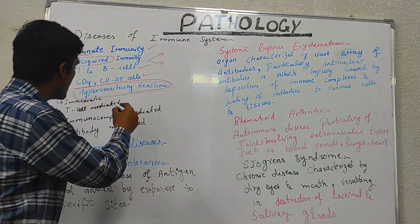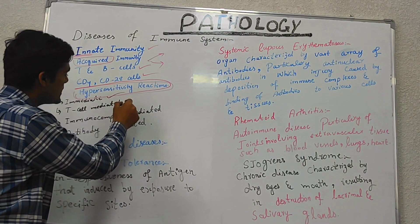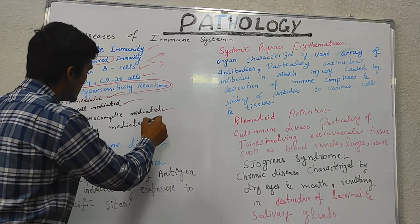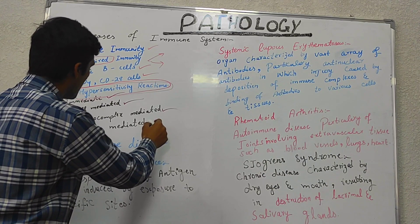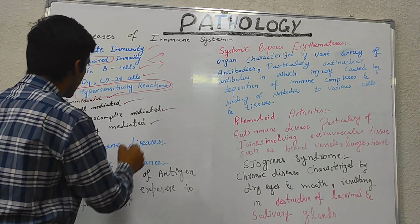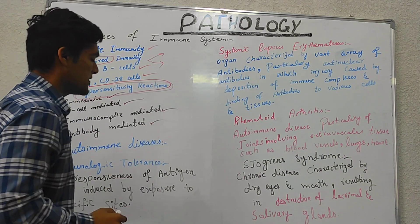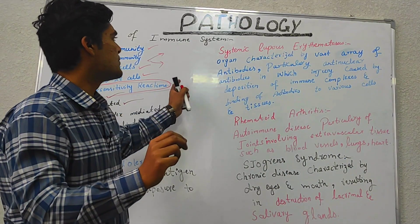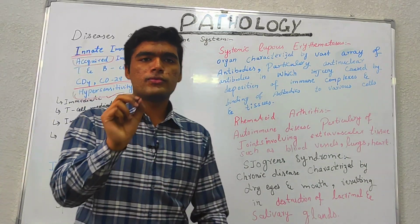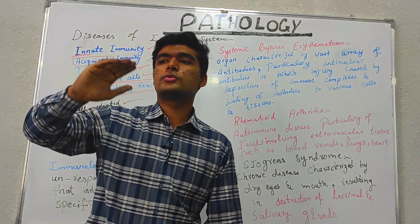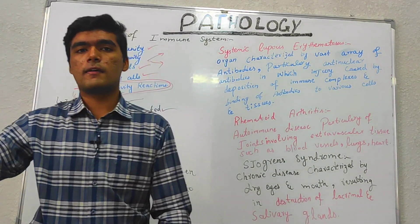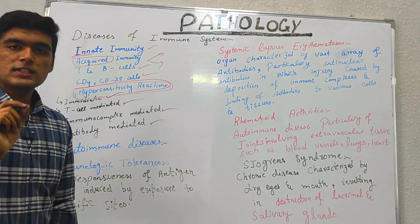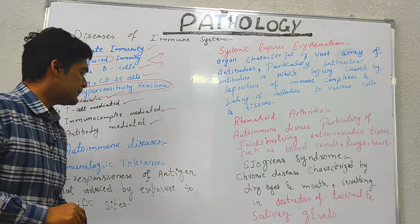There are four types of hypersensitivity reactions: immediate, T-cell mediated, immune complex-mediated, and antibody-mediated. After discussing this brief introduction, we are going to shift towards our main topic, which is diseases — the pathology.